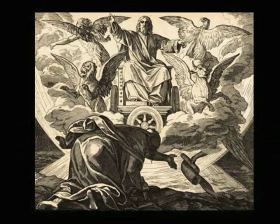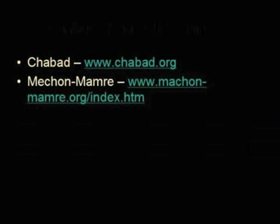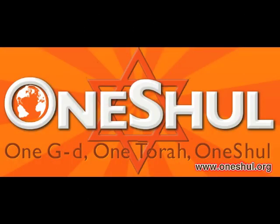The Tanakh contains the laws, history, prophecies, and writings of the Jewish people. The Tanakh, however, is a religious text that is for everyone. An English translation with commentary from Rashi is available through the Chabad website at www.chabad.org, located on the library page under Classic Jewish Text. A Hebrew version with English translations is available through Mechon Mamre at www.mechon-mamre.org.